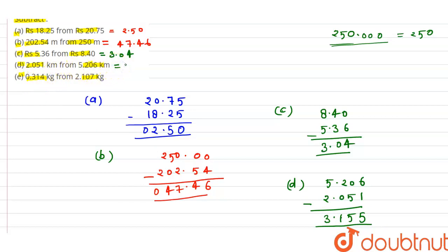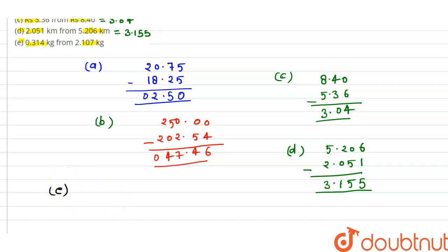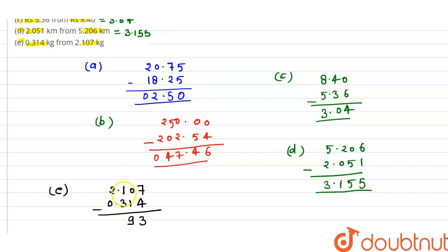For part E, we have to subtract 0.314 from 2.107. Subtracting digit by digit: 7 minus 4 is 3; we cannot subtract 1 from 0, so we take a carry — 10 minus 1 is 9; then we take another carry from the next digit — 10 minus 3 is 7; and finally 1 minus 0 is 1. So 2.107 minus 0.314 equals 1.793.